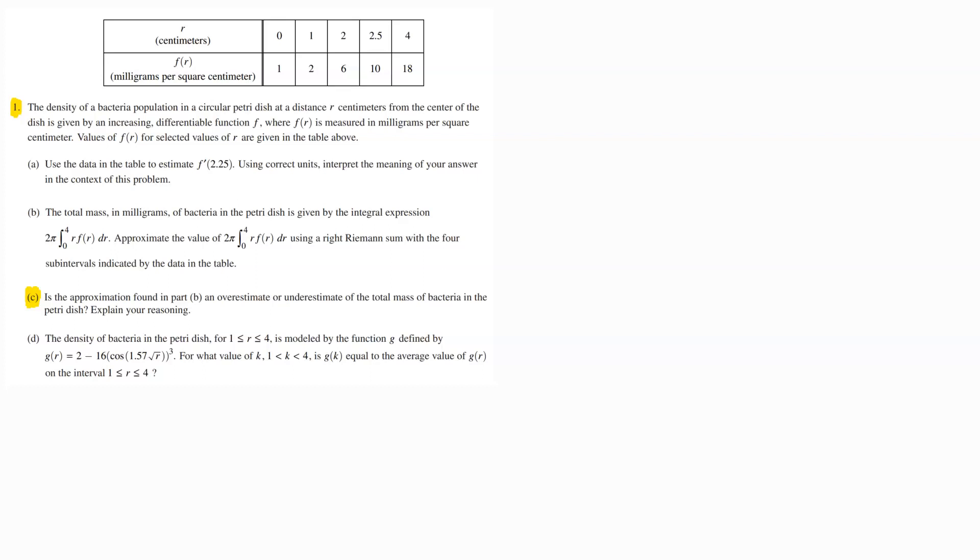Let's take a look at what they want. They want to know, is the approximation we found in Part B an over or an underestimate to the total mass of the bacteria in the Petri dish? We don't even need to know what our answer was in Part B. When we do this type of over-underestimated game, when we're talking about Riemann sums,